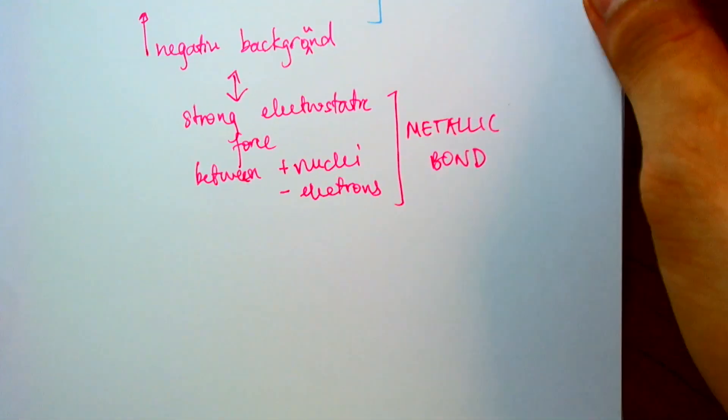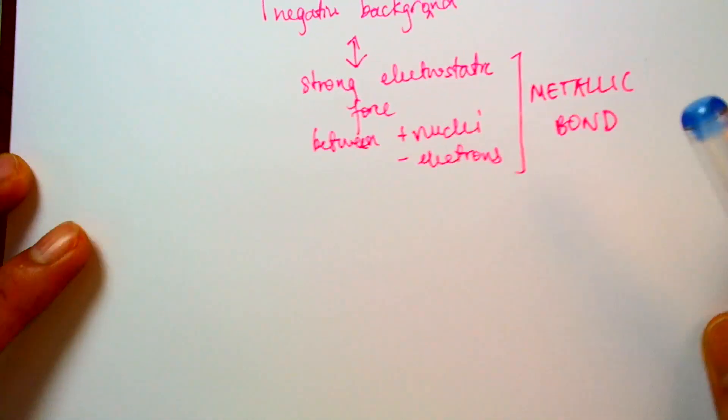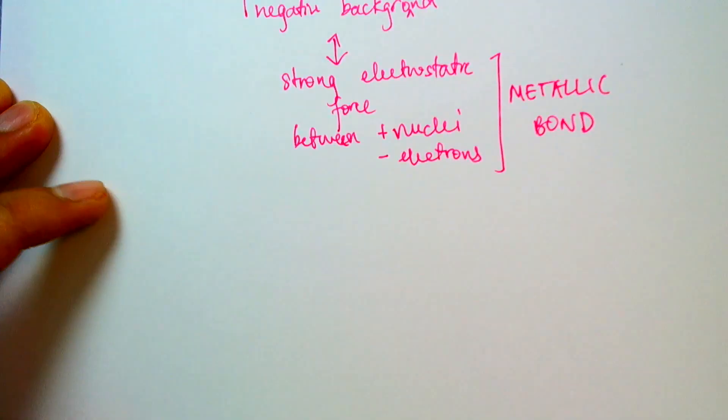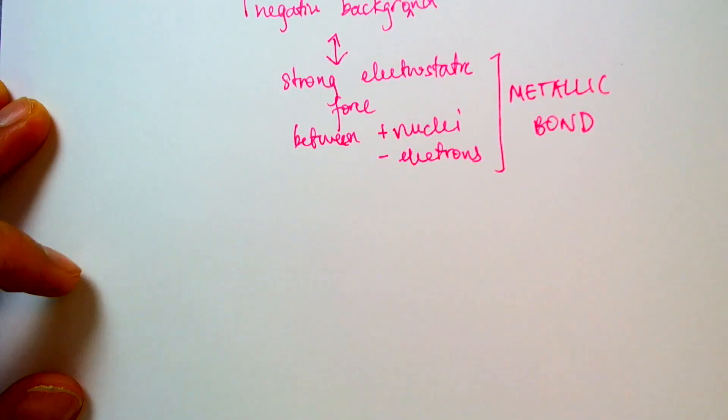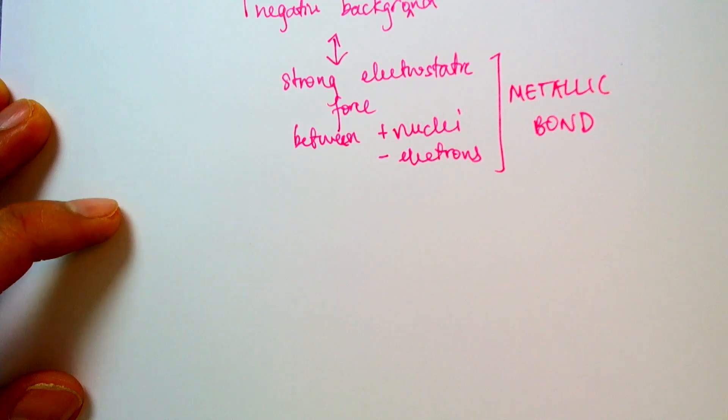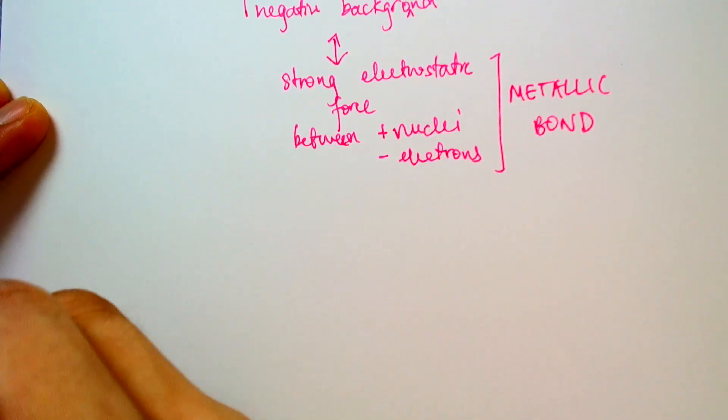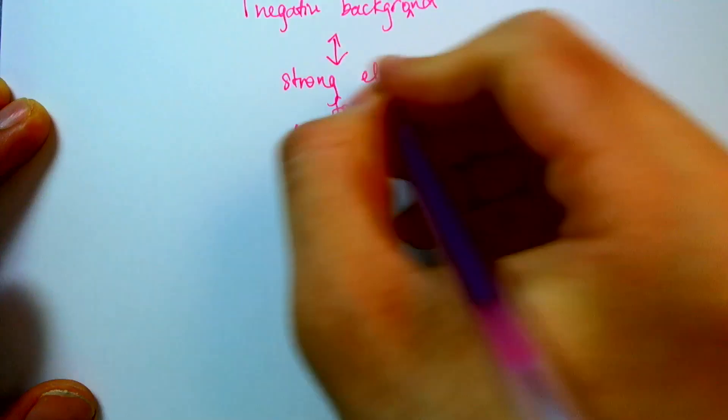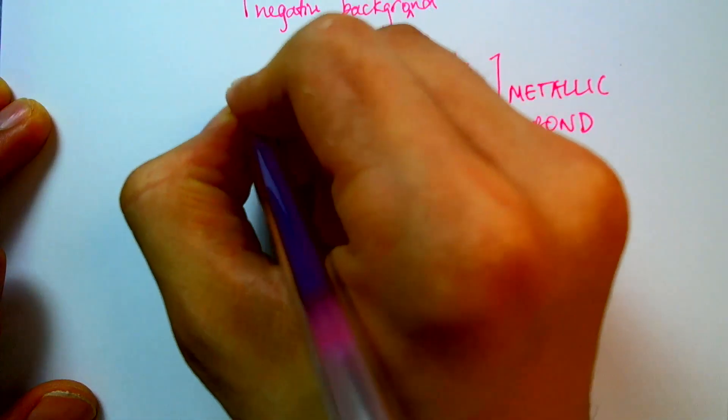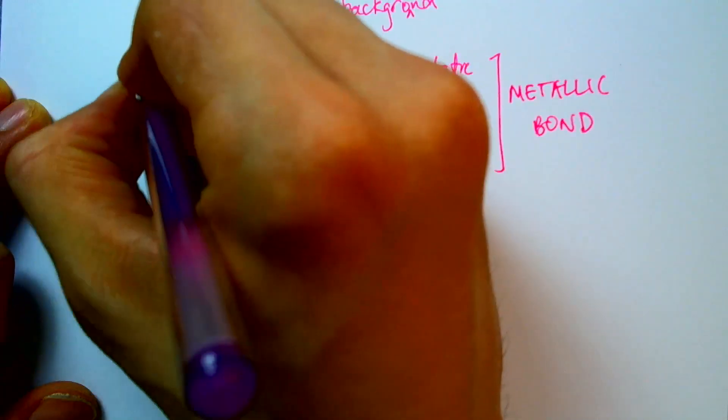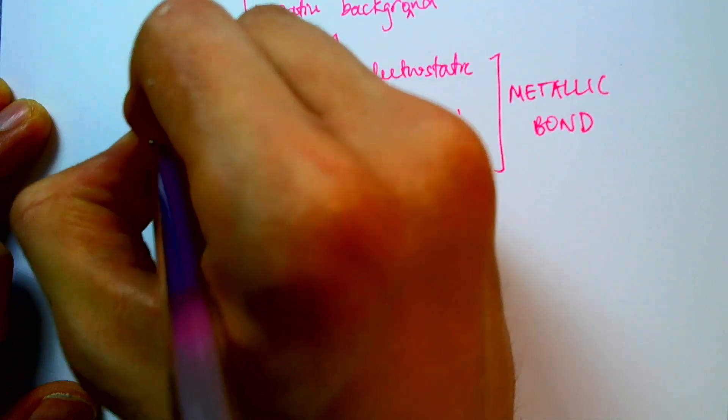So because of these strong metallic bonds and these charges being able to flow, we have some interesting properties of a metallic solid. So because of these strong electrostatic forces, these give rise to high melting points.